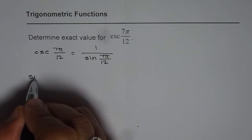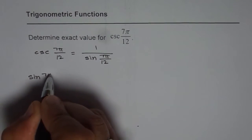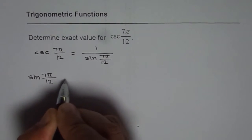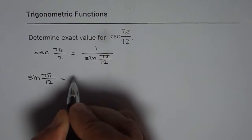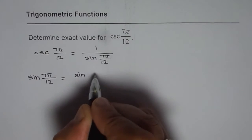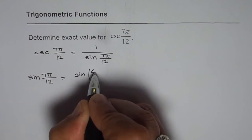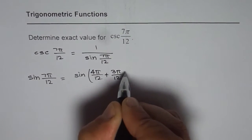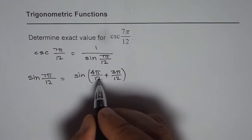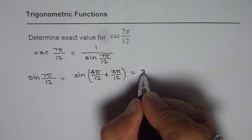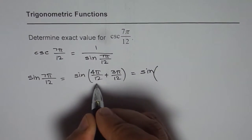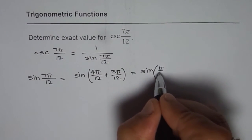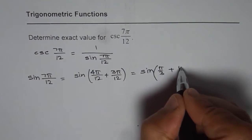So let's begin by solving this equation using compound angle formula. We can write 7 pi by 12 as combination of 4 pi by 12 plus 3 pi by 12. That is 7 pi by 12. Now we can simplify this. So we get sine of 4 goes 3 times, so we get pi by 3 plus pi by 4.